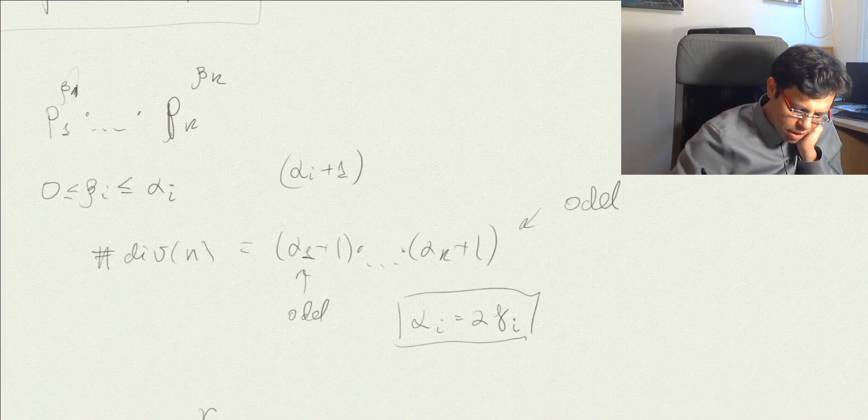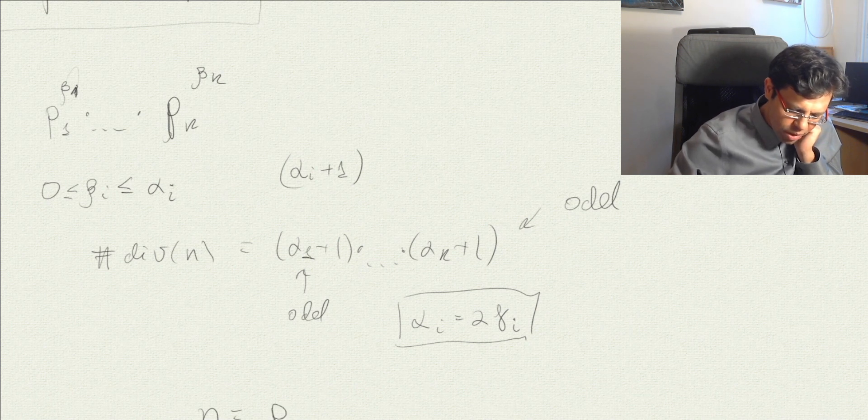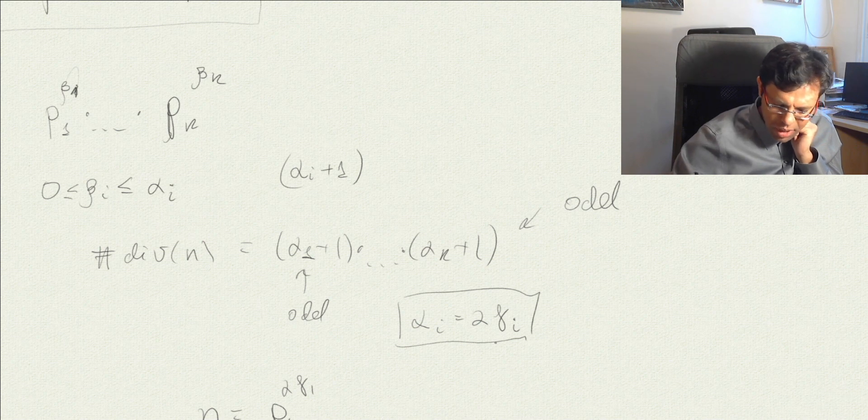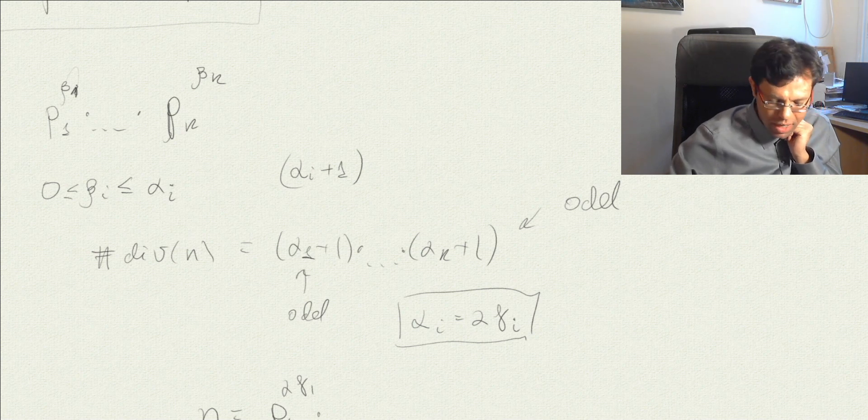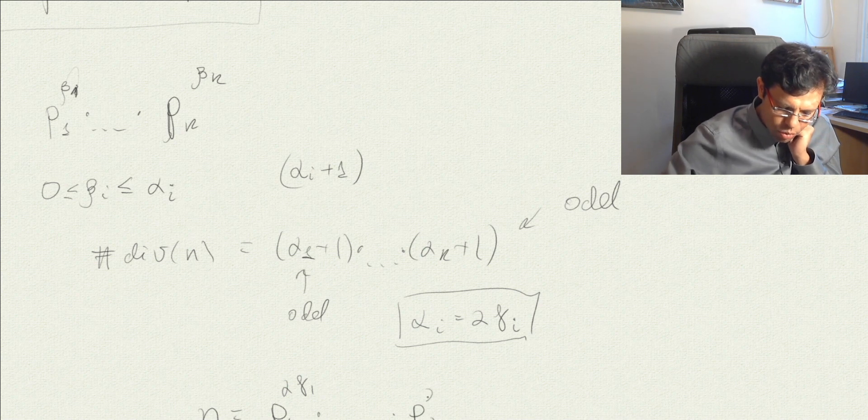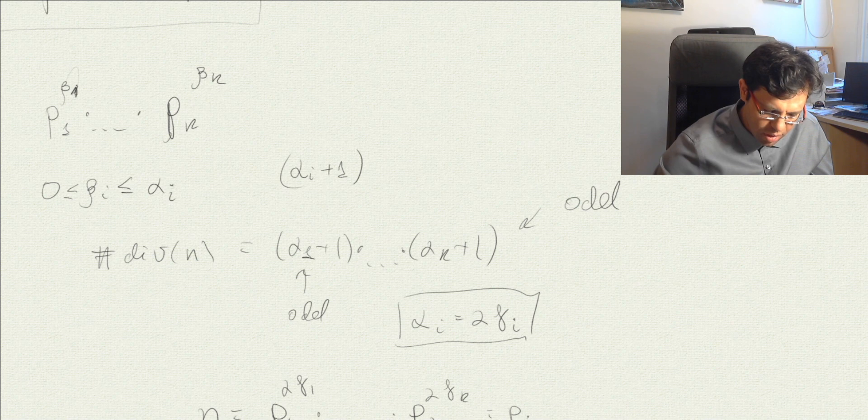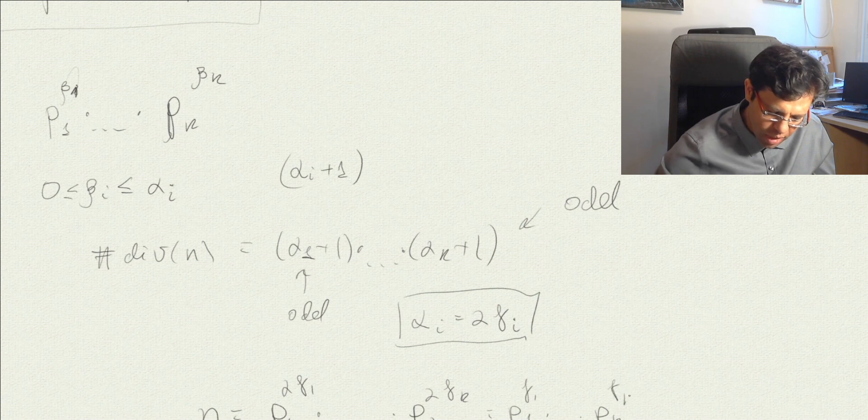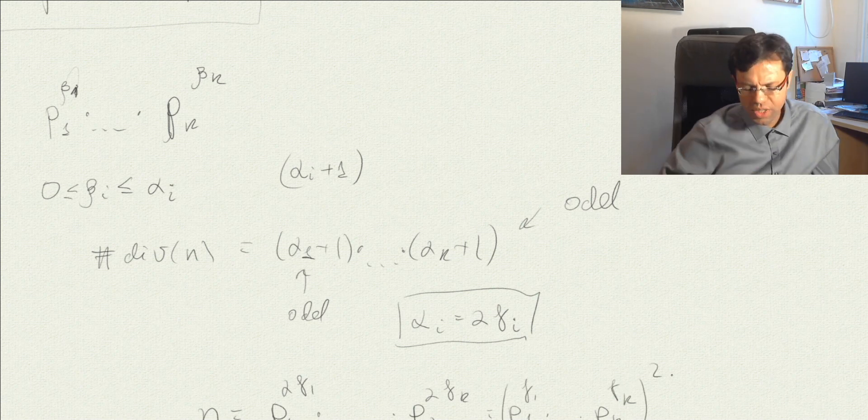This means that n can be factorized in a unique way as p1 to the power of 2 gamma 1, where gamma 1 is just half alpha 1, because alpha has to be even if n has an odd number of divisors. And then pk to the power of 2 gamma k, which can be written as (p1 to the power of gamma 1 up to pk to the power of gamma k) squared. So look what we see. We see that n has to be a square number in order to be turned on.